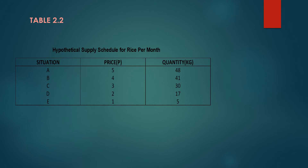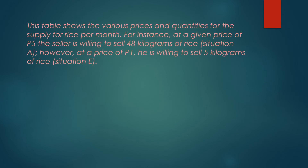Table 2.2 — Hypothetical supply schedule for rice per month. We have here situation, price, and quantity. This table shows the various prices and quantities for the supply of rice per month. For instance, at a given price of 5 pesos, the seller is willing to sell 48 kilograms of rice — situation A. However, at a price of 1 peso, he is willing to sell only 5 kilograms of rice — situation A.